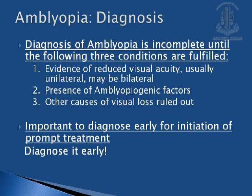To diagnose amblyopia, the diagnosis is incomplete until three conditions are fully satisfied. First, there should be evidence of reduced visual acuity, which is usually unilateral. There should be a presence of amblyogenic factors, and other causes of visual loss should be ruled out. It is important to diagnose amblyopia early for early intervention.